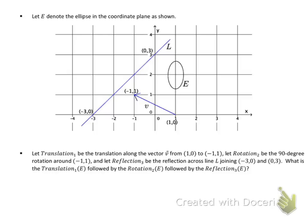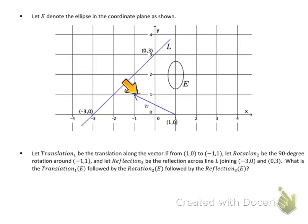Let's look at this example that's not in your classwork. We have this diagram with ellipse E. Translation 1 is a translation along a vector starting at (1, 0) and ending at (-1, 1).